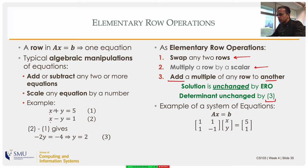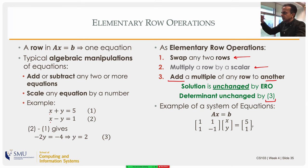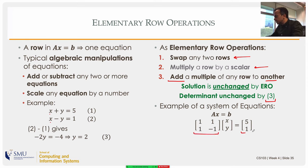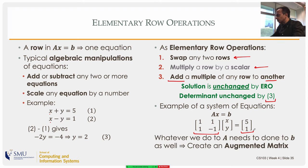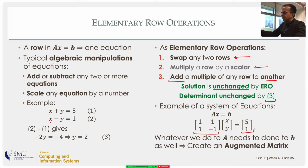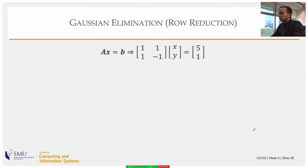Let's cast our equations in matrix form. For x plus y equals 5 and x minus y equals 1, we get the coefficient matrix and the constants. Since whatever we do to the left-hand side we must do to the constants as well, we create the augmented matrix — placing the constants alongside A, separated by a bar. This augmented matrix is what we operate on.